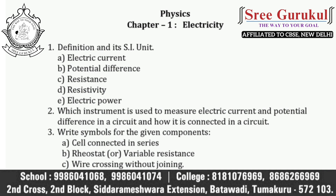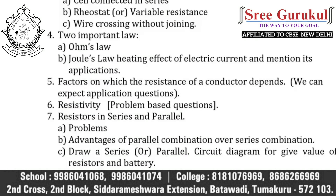Next, which instrument is used to measure electric current and potential difference in a circuit and how it is connected in a circuit? Next question: write symbols for the given components — most frequently asked are cell connected in series, rheostat or variable resistance, and wire crossing without joining.